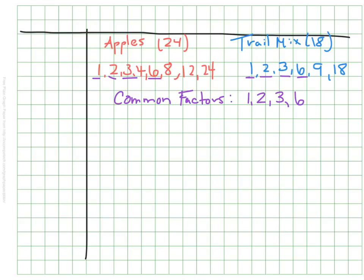Using our common factors, let's look at our choices of how we could organize the packs. We could have one pack, and that one pack would have 24 apples and 18 trail mixes. That would be great if she decided not to share. But if a friend wanted to come, she could also make two packs, and in each of those packs, there would be 12 apples and nine trail mixes.